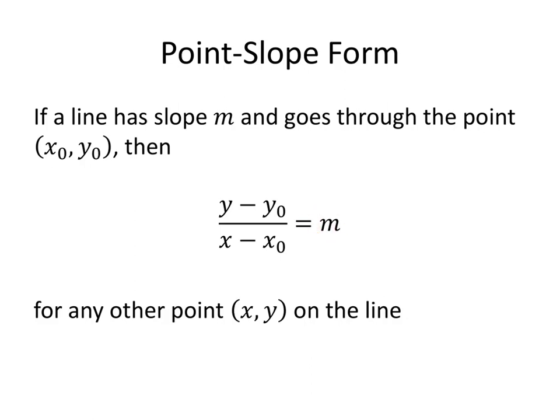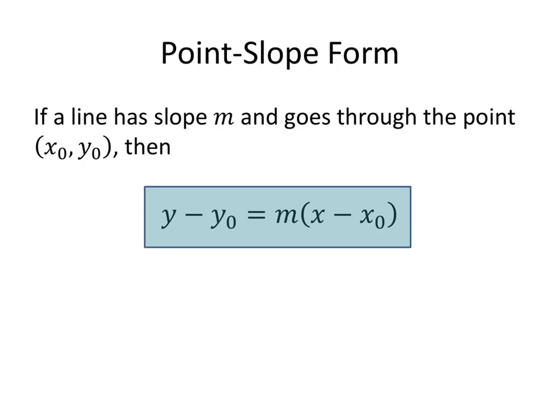So to turn this into an easier-looking equation, all we're going to do is multiply both sides of this equation by that denominator, x minus x-naught. And on the left-hand side, the x minus x-naughts just divide out. And so what we end up with is y minus y-naught equals m times the quantity x minus x-naught.